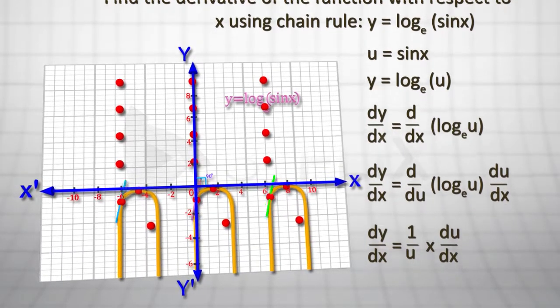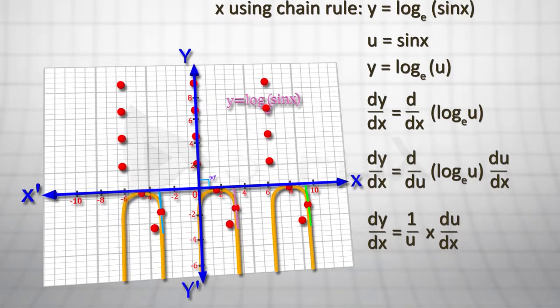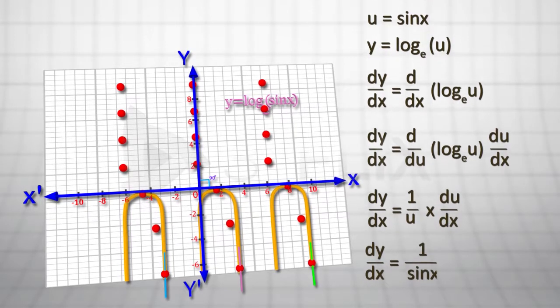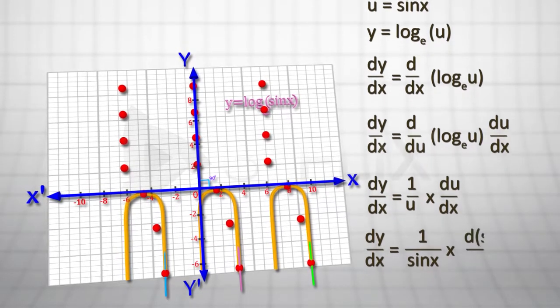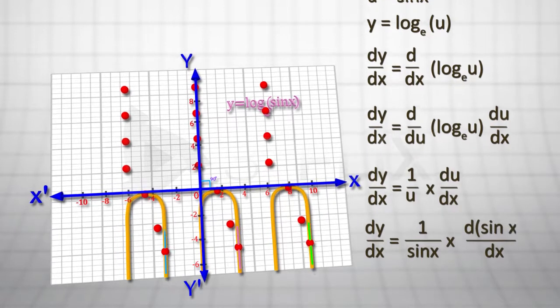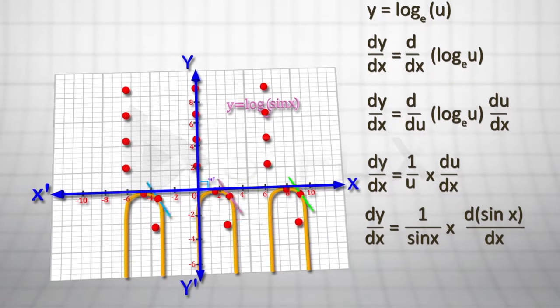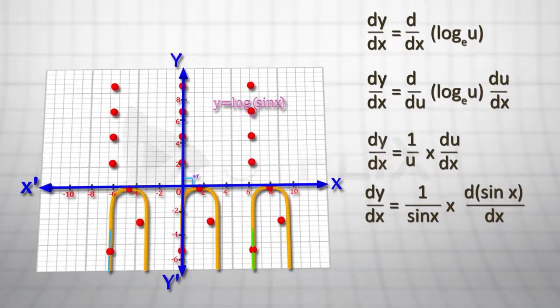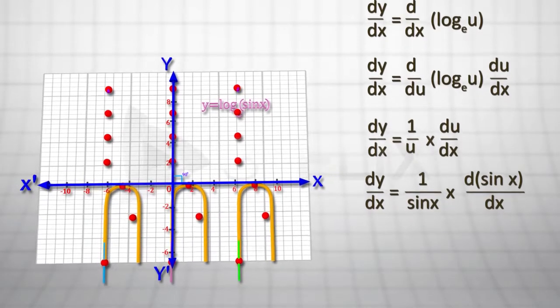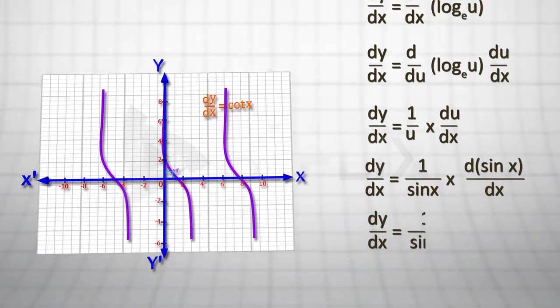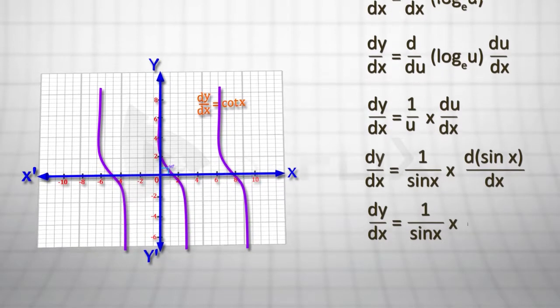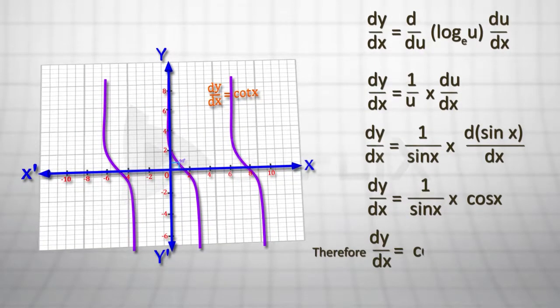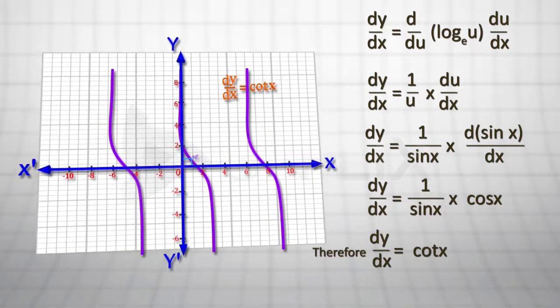Now, substituting u is equal to sine x, we have dy by dx is equal to 1 by sin x multiplied by d by dx of sine x. Again, the derivative of sine x with respect to x is cos x. So dy by dx is equal to 1 by sin x multiplied by cos x. Therefore, dy by dx is equal to cot x.